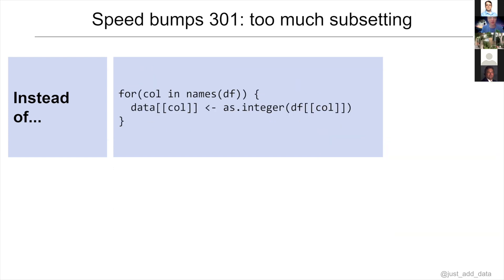Speed bumps: too much subsetting — it's a little bit sneaky. Maybe you read in a data frame and for whatever reason you've got a whole bunch of columns that were read in as characters and you want to convert them all to integers. You might iterate over columns and force a new type on those columns. One way to do this is: for each column in column names, overwrite that column by forcing a new type.